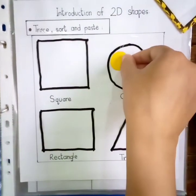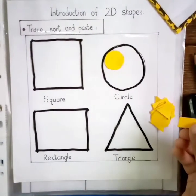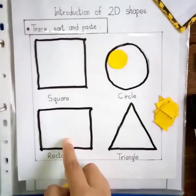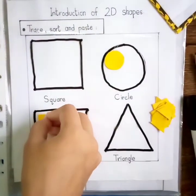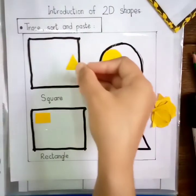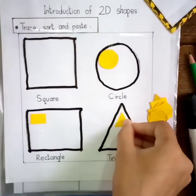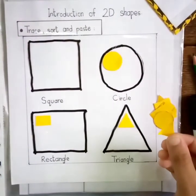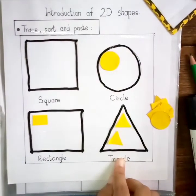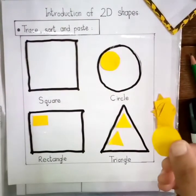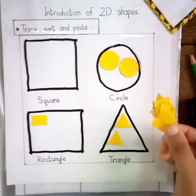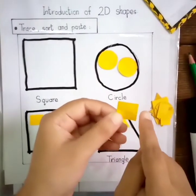Which shape is this? Rectangle. Is this rectangle? No. Is this rectangle? Yes. So I will put rectangle in this shape. Now, which shape is this? Triangle. I have placed triangle in its shape. Which shape is this? Circle. Which shape is this? Square. Square has 4 sides equal.